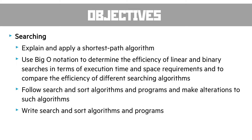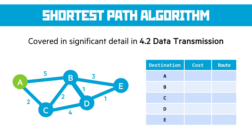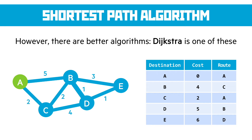Let's remind ourselves what we're talking about here — shortest path algorithms. If you watch the playlist on 4.2 data transmission, we cover the basis of this in much more detail. However, it doesn't cover Dijkstra's algorithm, which is what we'll talk about today. On a very simplistic scale, we need to work out the shortest path from each node to each other and then compute back to work out what we need.